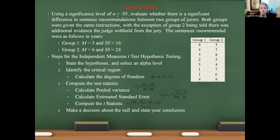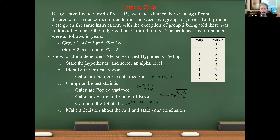Here's a learning check. In group one, you have a mean of 3 and a sum of squared deviations of 16. Group two has a mean of 6 and a sum of squared deviations of 24. Using an alpha level of 0.05, determine whether there is a significant difference in sentencing recommendations between two separate jury groups. Group two was told there was additional evidence withheld by the judge; group one did not have that knowledge. Individual raw data is provided — go ahead and pause and work through the steps using the formulas.